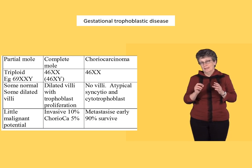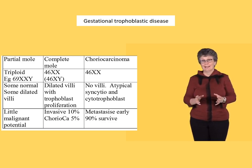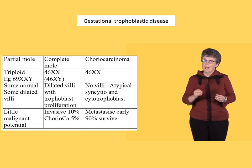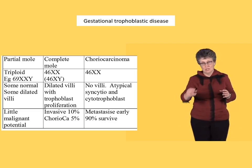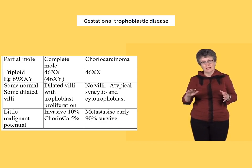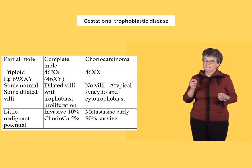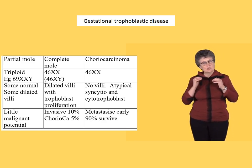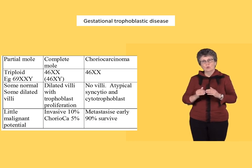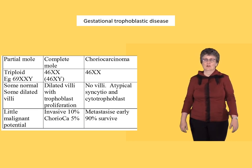These complete moles are evacuated surgically when they're discovered, but some of them have persistent gestational trophoblastic disease. This is detected by serial measurements of HCG, and if it doesn't fall normally or starts to rise, then we have persistent trophoblastic disease. This could just mean a bit was left behind, but it could also mean that the mole was invading the wall of the uterus, or that choriocarcinoma had formed.